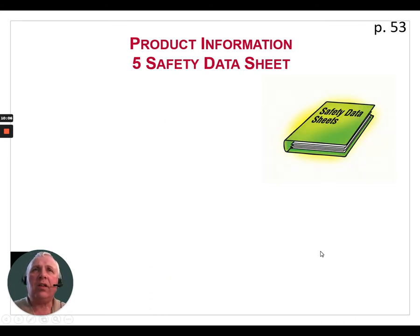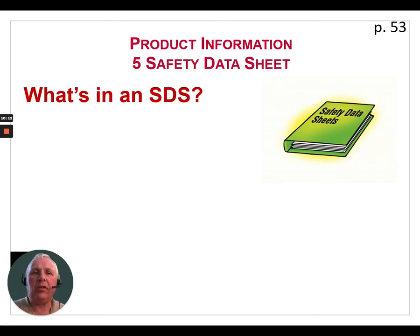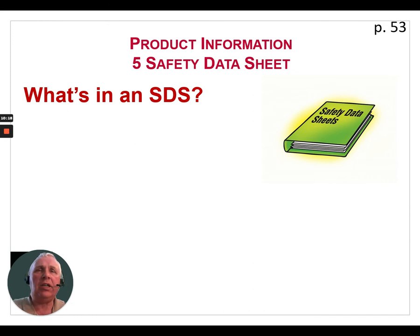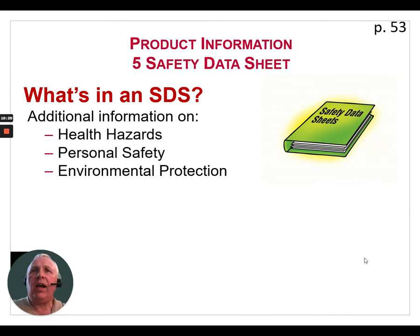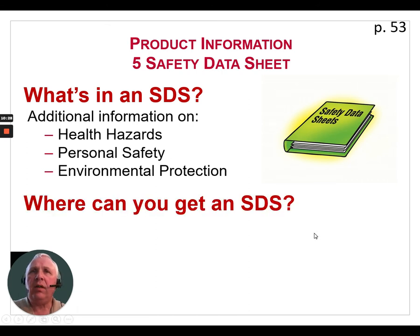The next topic is safety data sheets. These used to be called material safety data sheets, but to align with international standards they are now called safety data sheets. A safety data sheet contains additional information on health hazards, personal safety, and environmental protection — providing more detail than the pesticide label itself.